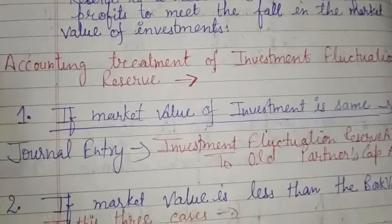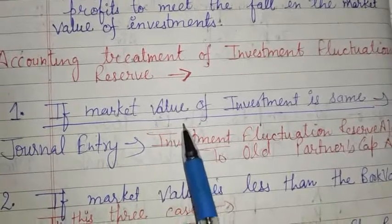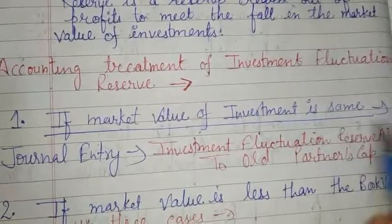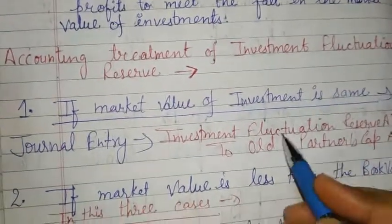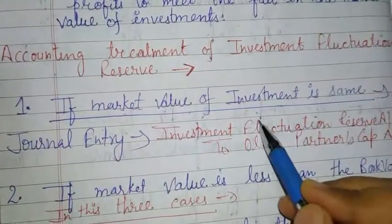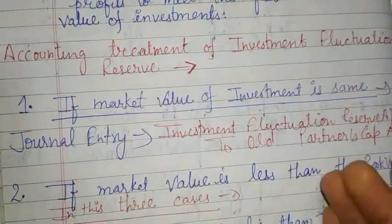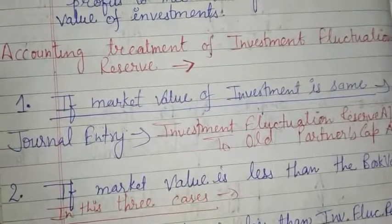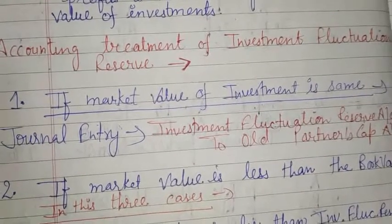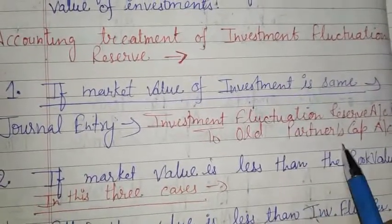The first case is when the market value of investment is the same as the book value. For example, a partnership firm has an investment of 2 lakhs, and the future market value is also 2 lakhs. In this case, the entry is: Investment Fluctuation Reserve Account debit to Old Partners' Capital Account.